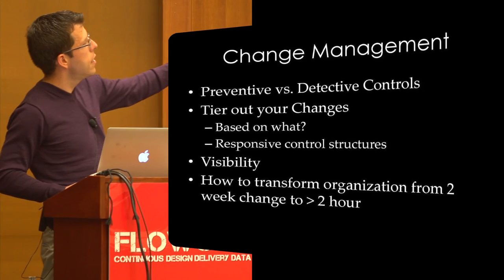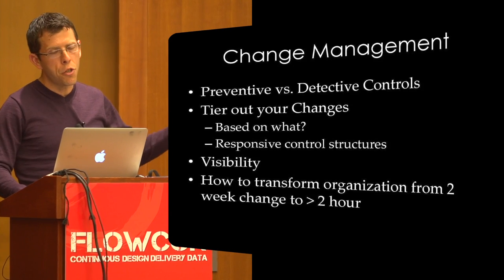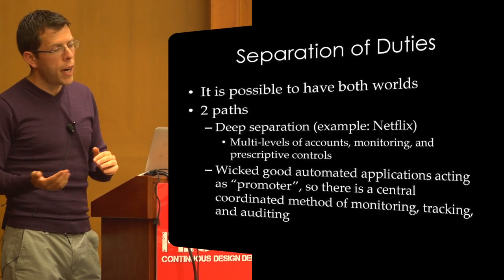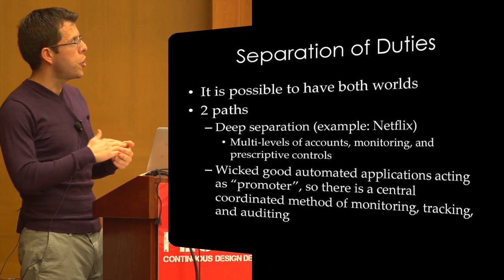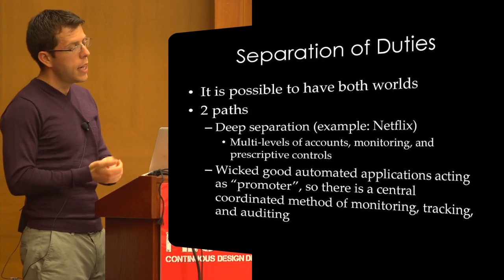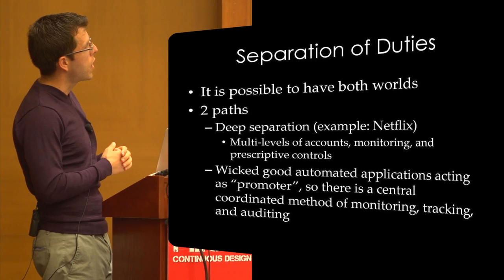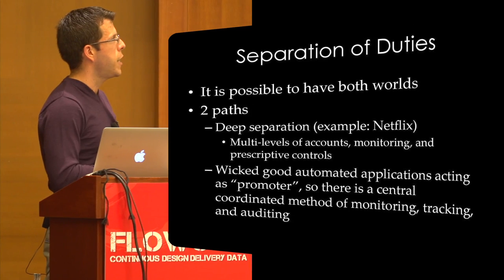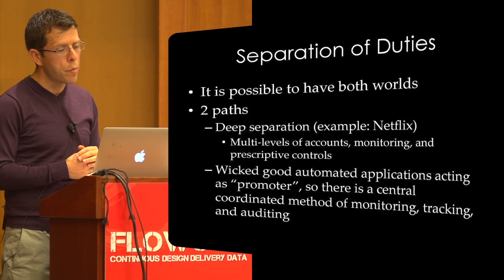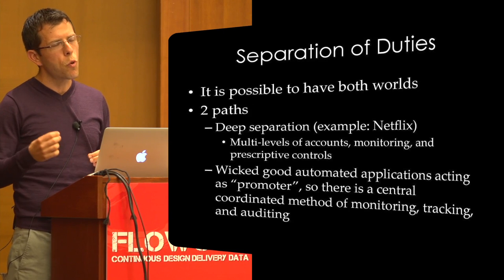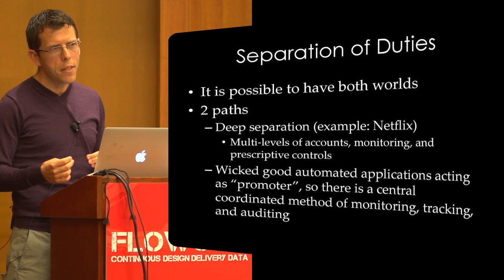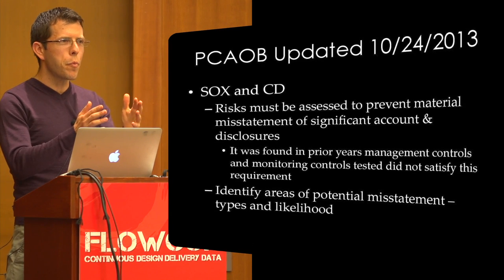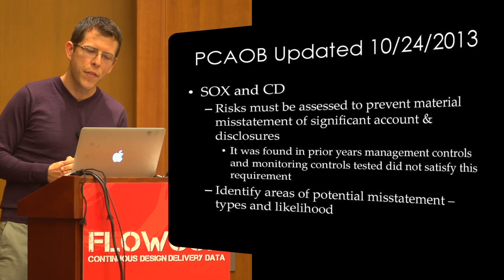It's important to communicate that while dev is pushing to production, there is intelligence in the middle that you've built — and you have to take credit for that. Otherwise people just think you're literally pushing straight to production. Change management visibility, and how you change an organization from a two-week change to a two-hour change, has to do with that automated integration. Separation of duties: it is possible to have both worlds where you have separation and do high throughput — a great example this morning with Netflix, multilevel accounts and monitoring, or a wicked good application in the middle acting as the promoter. Also, a lot of standards don't require separation of duties — so get in front of the train, rationalize why it's being asked, and close that out.